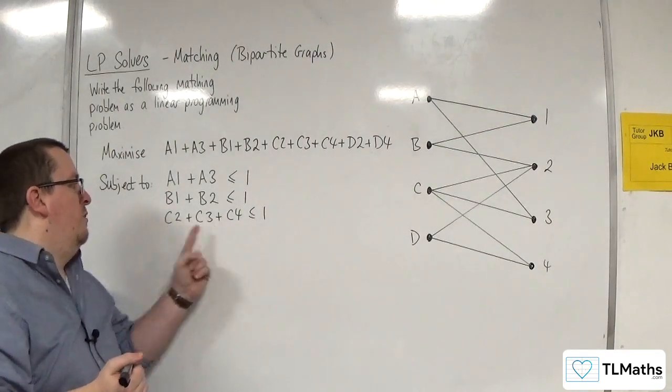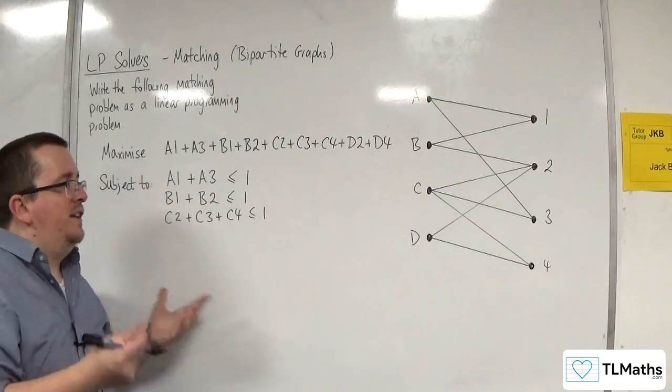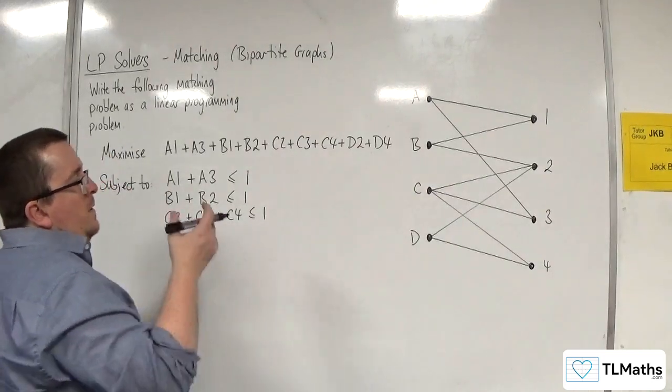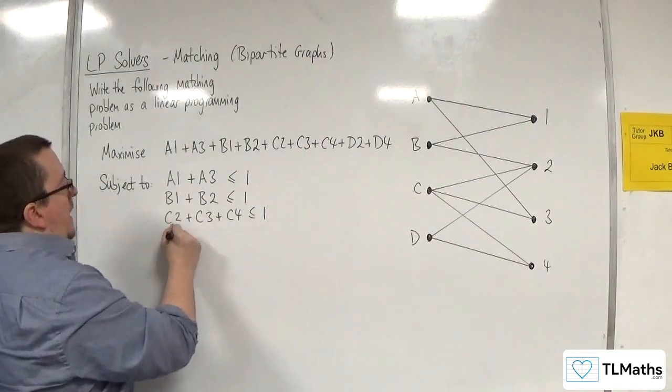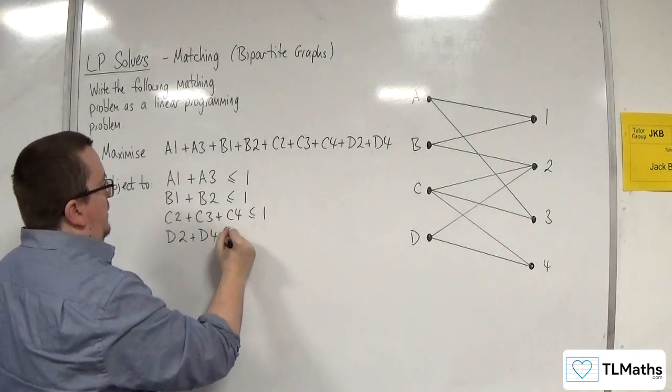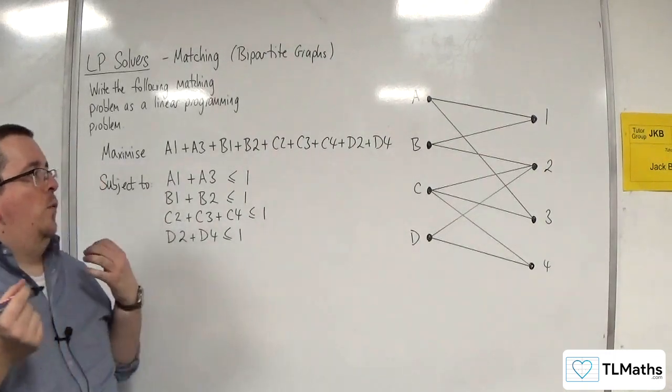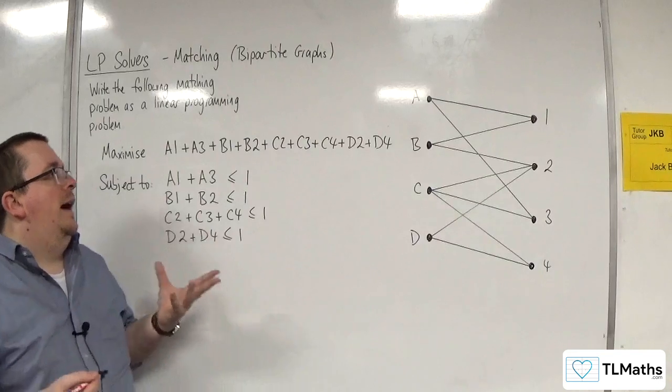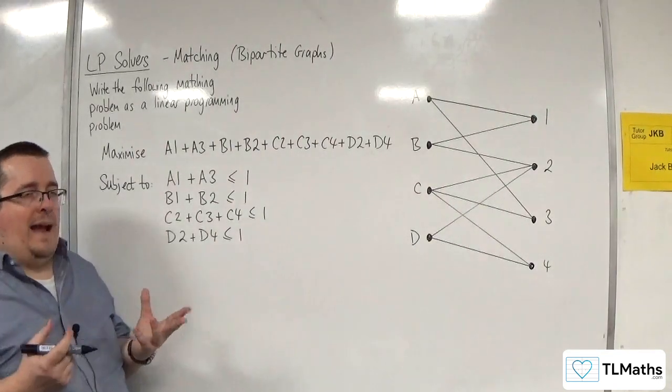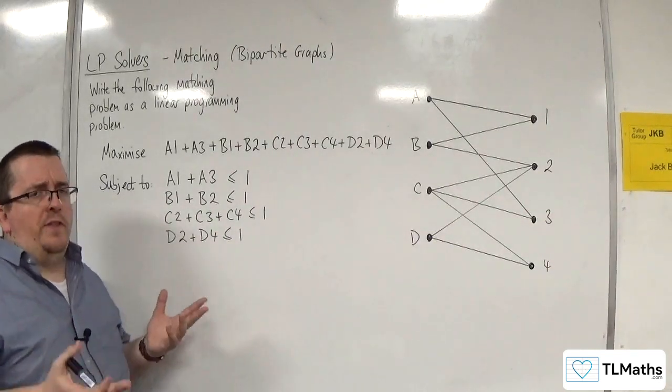So we're either going to have 0, 0, 0, or 1, 0, 0, or 0, 0, 1, depending on which of the jobs he gets picked to do. Then for worker D, we've got D2 plus D4. That's going to be less than or equal to 1. Right. Now, what that does is it stops a worker from being allocated to more than one job. That's what those constraints do.